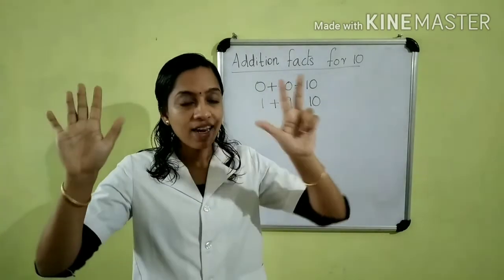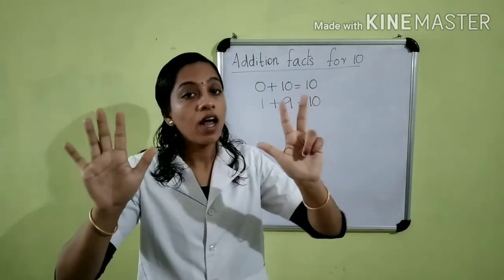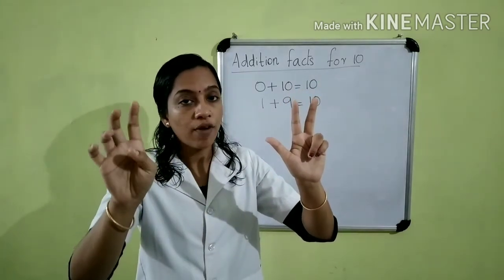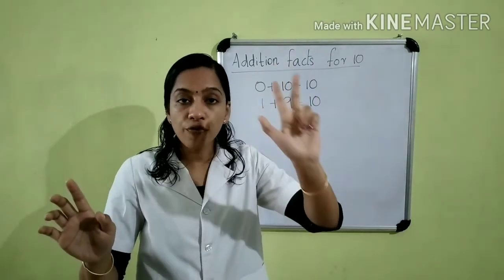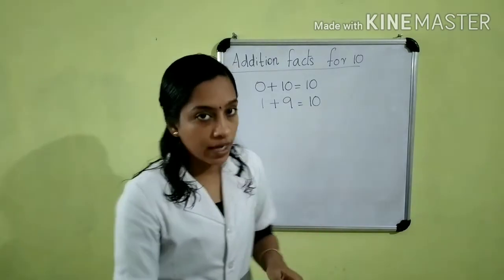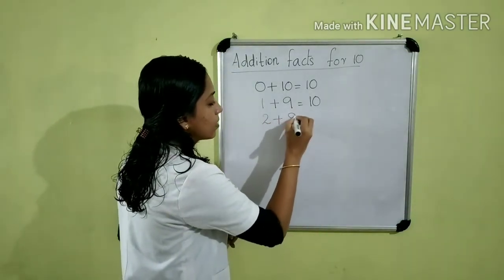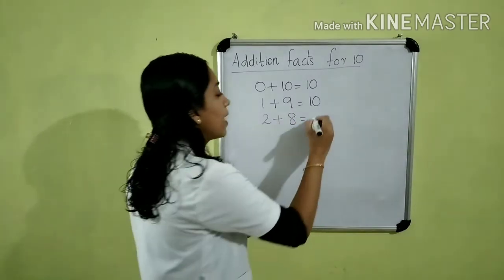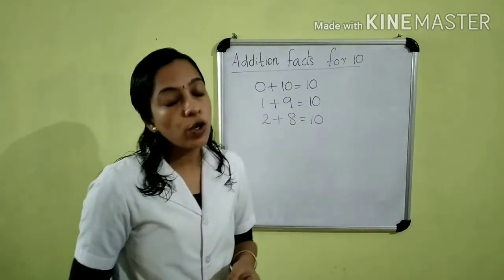Children, listen. How many fingers are folded? 2. Then how many fingers are extended? 8. That is, 2 fingers are folded and 8 fingers are extended. So we can write, 2 plus 8 is equal to 10.